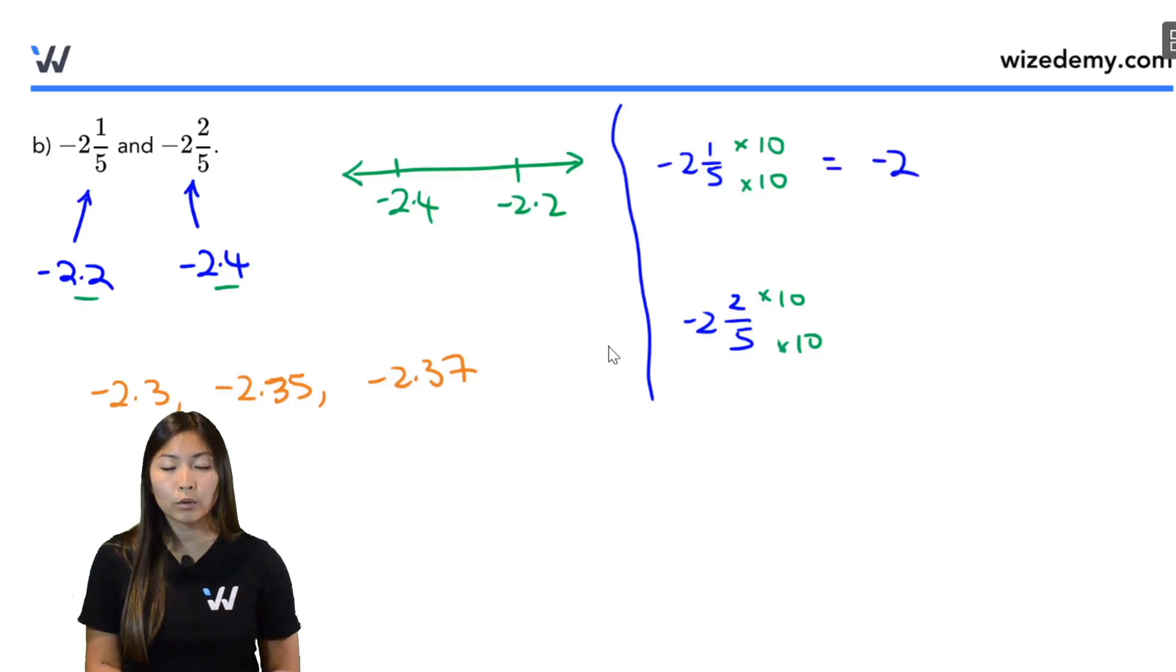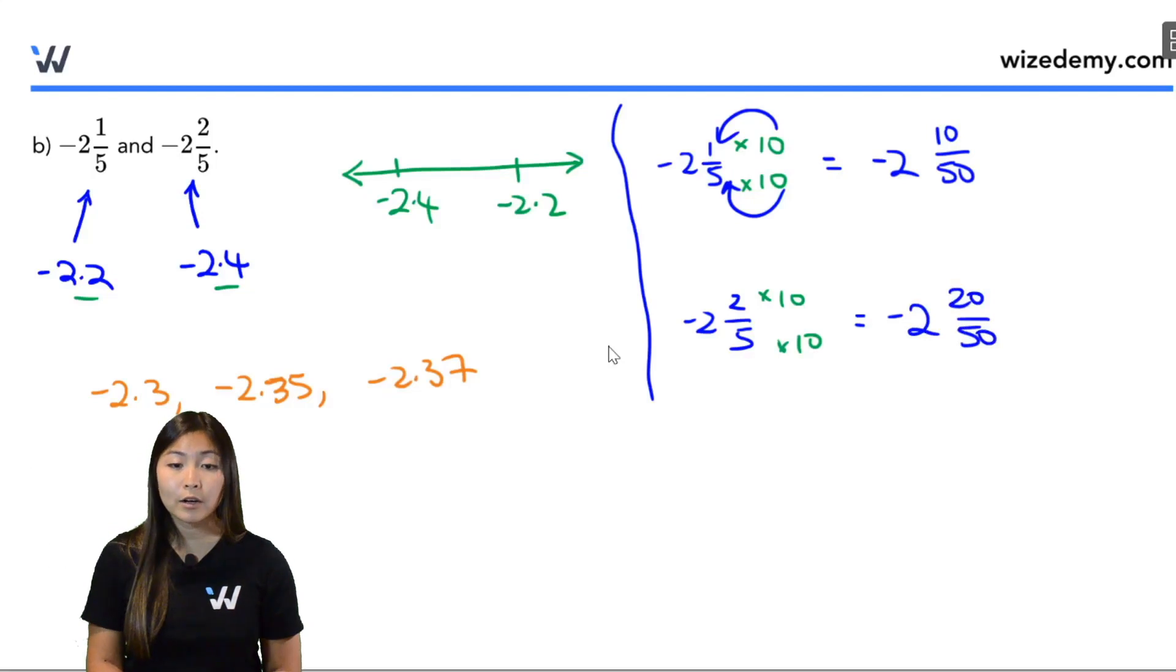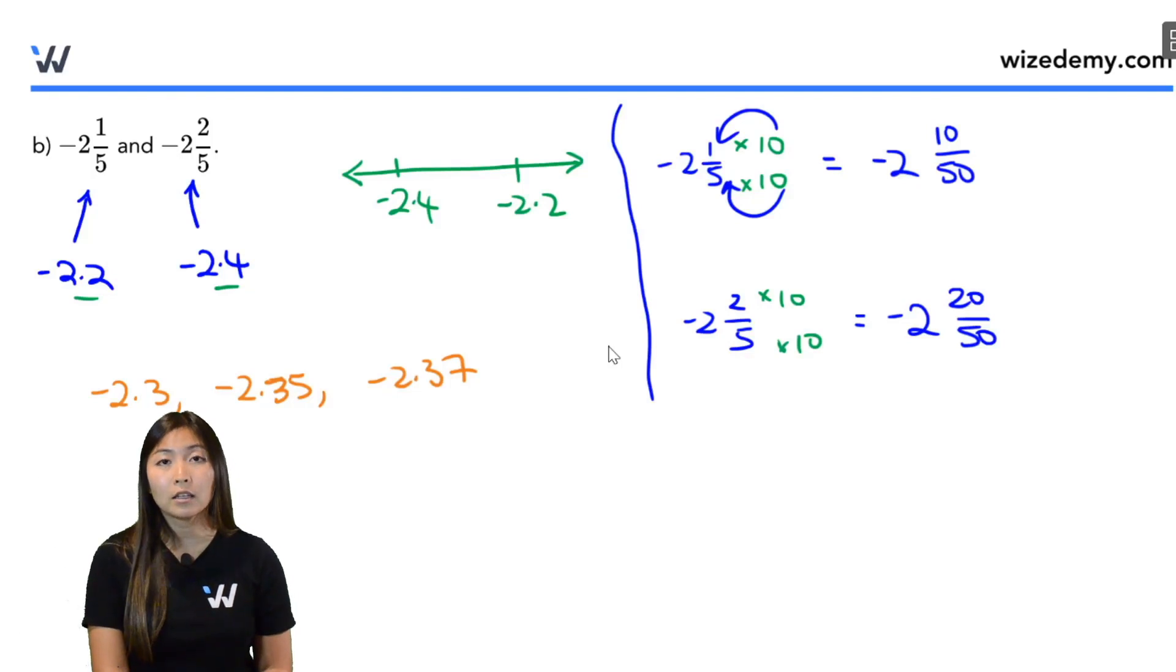I'm just going to tag along that zero to the right side of the number. So I have negative 2, that's the whole number part. Instead of 1 over 5 I now have 10 over 50. I'm just mushing this zero to the right of the number. Over here I have negative 2 and 20 over 50. Now we want numbers that are in between them. So fraction parts, I'm looking for numbers that are between 10 over 50 and 20 over 50.